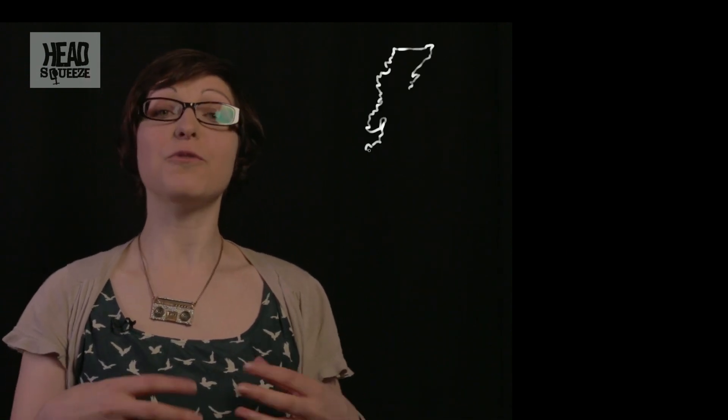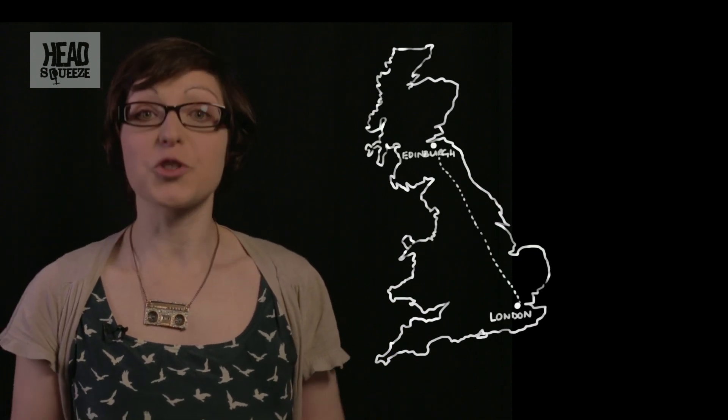Inside your brain you have a low powered organic supercomputer and it's fed by 400 miles of capillaries carrying blood. If you stretched all of those capillaries out you would reach from London to Edinburgh. And on top of that you have 100,000 miles of nerves. If you wrapped them around the world you'd get four times round before you ran out of nerve.